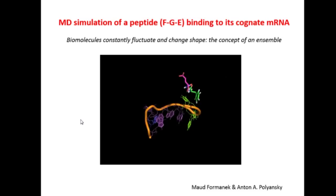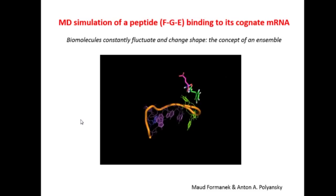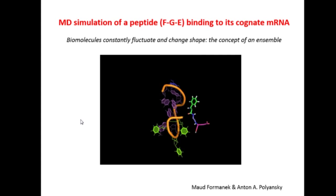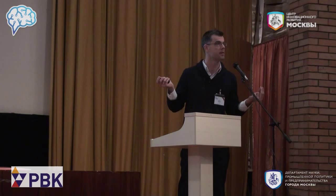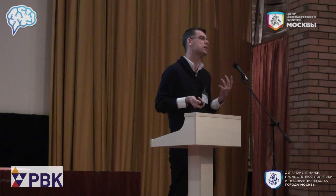From understanding the behavior of biomolecules to trying to manipulate their function, if we had an atomistic microscope of this sort, it would be tremendously beneficial and useful. What goes into a movie like this? There are essentially four basic challenges that comprise a molecular model of this type. First, you have to choose your degrees of freedom — you have to ask and design what are the basic particles that are interacting in a model of this sort.